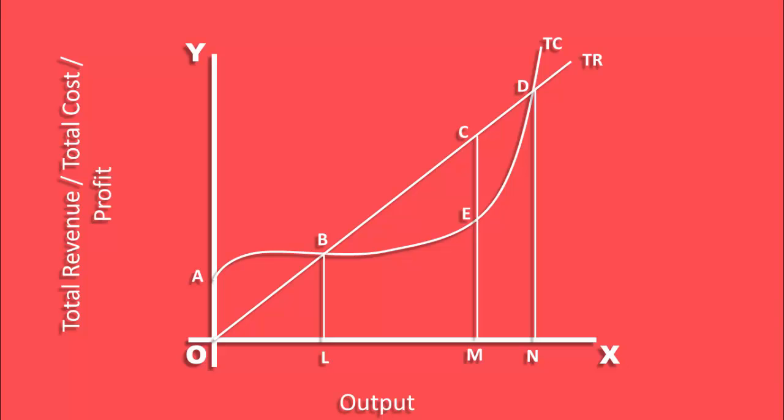MC is the total revenue, ME is the total cost, EC is the profit. This is the maximum profit. If you draw a tangent to total cost curve at point E, it will be parallel to the total revenue curve.